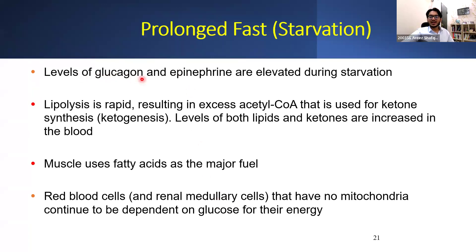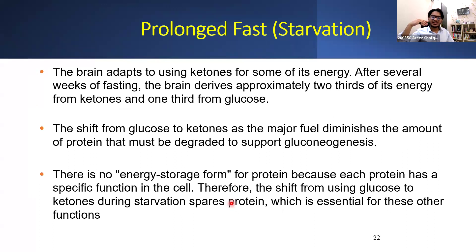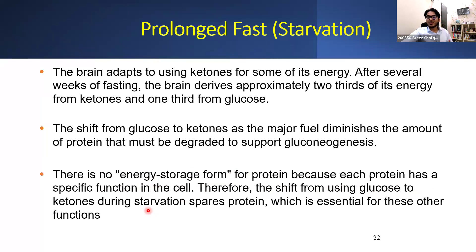In a prolonged fast, levels of glucagon and epinephrine are very elevated. Lipolysis is occurring rapidly, resulting in excess acetyl-CoA used for ketogenesis. Levels of both lipids and ketones are therefore increased in a prolonged fast. Muscle utilizes fatty acids as the major fuel, but can also utilize ketones. Red blood cells have no mitochondria and continue to depend on glucose for their energy. The brain adapts to using ketones after several weeks of fasting — deriving approximately two-thirds of its energy from ketones and only one-third from glucose. This shift diminishes the amount of protein that must be degraded to support gluconeogenesis, i.e., it's saving muscle wasting. There is no storage form of protein — each protein has a specific function — therefore, the shift from glucose to ketones during starvation spares proteins essential for other functions.